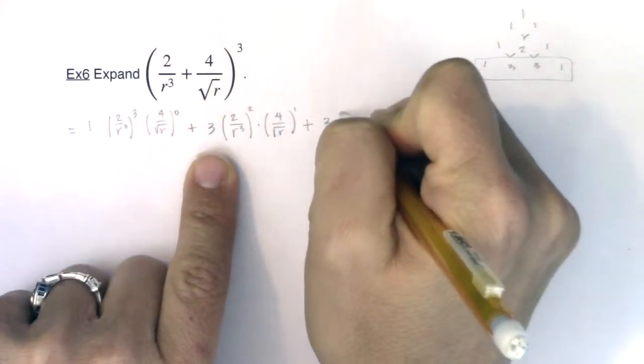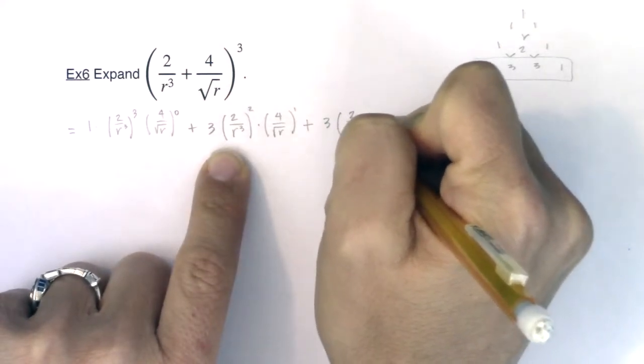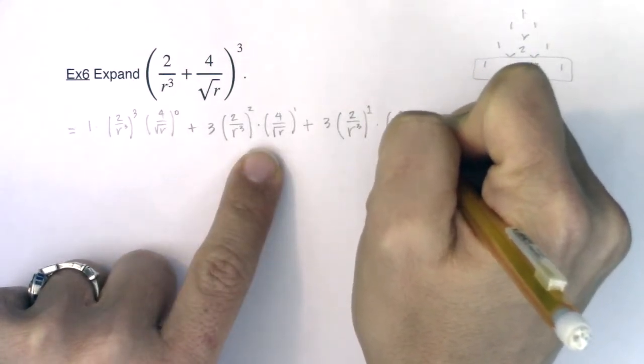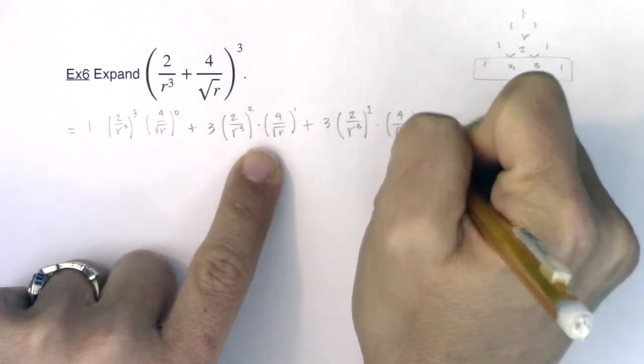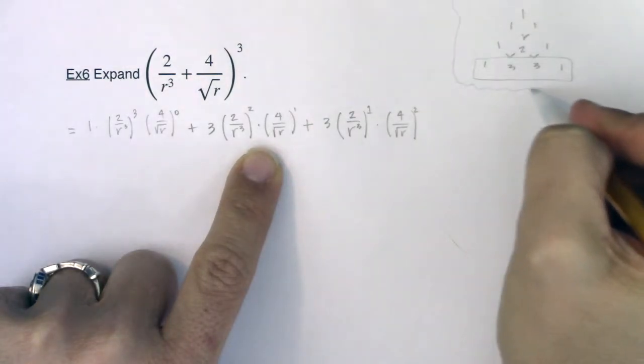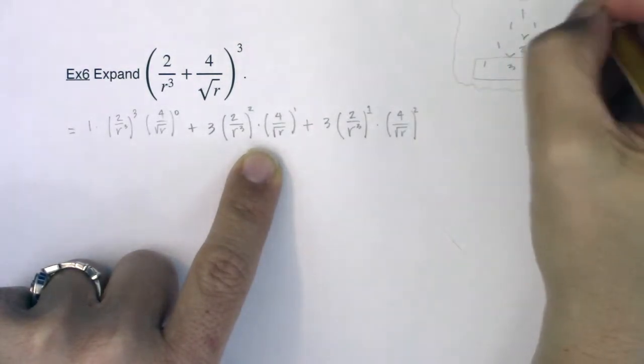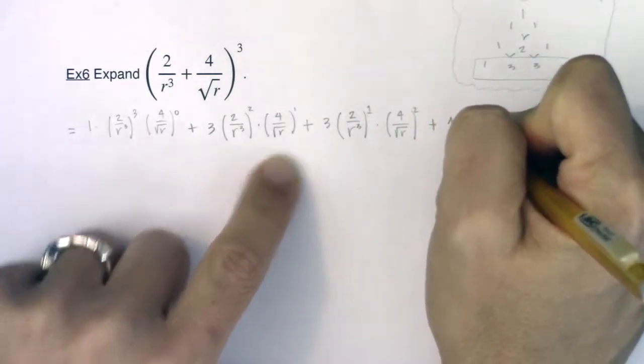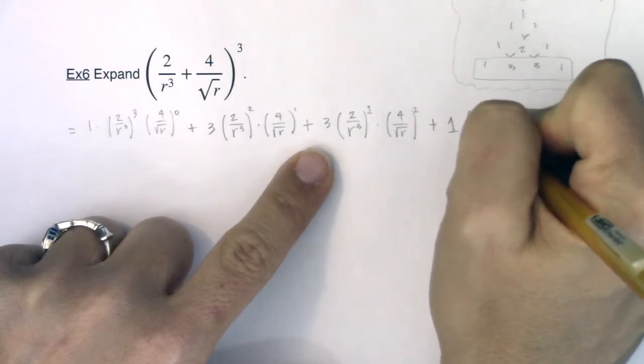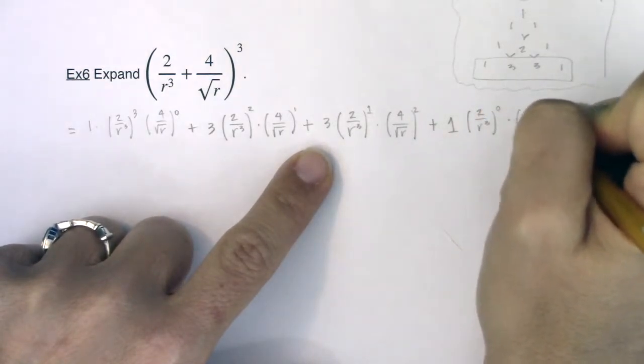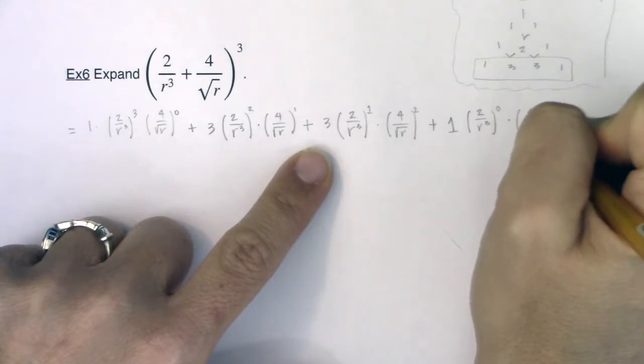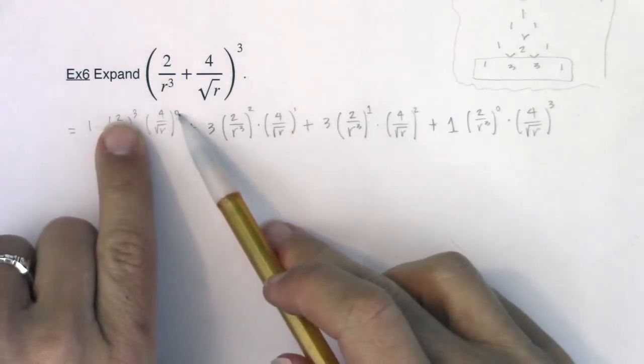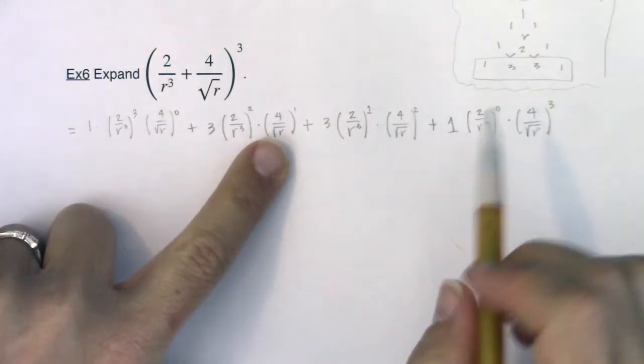My next coefficient is going to be 3. I'm going to decrease the power on 2 over r cubed and I'm going to increase the power on 4 over the square root of r. And then last but not least, my last coefficient is 1. We've got 2 over r cubed. I'm going to decrease the power there but increase the power on 4 over square root of r. And let me just do a quick check, make sure this is working. So 3 plus 0 is 3, 2 plus 1, 1 plus 2, 0 plus 3. That looks good.